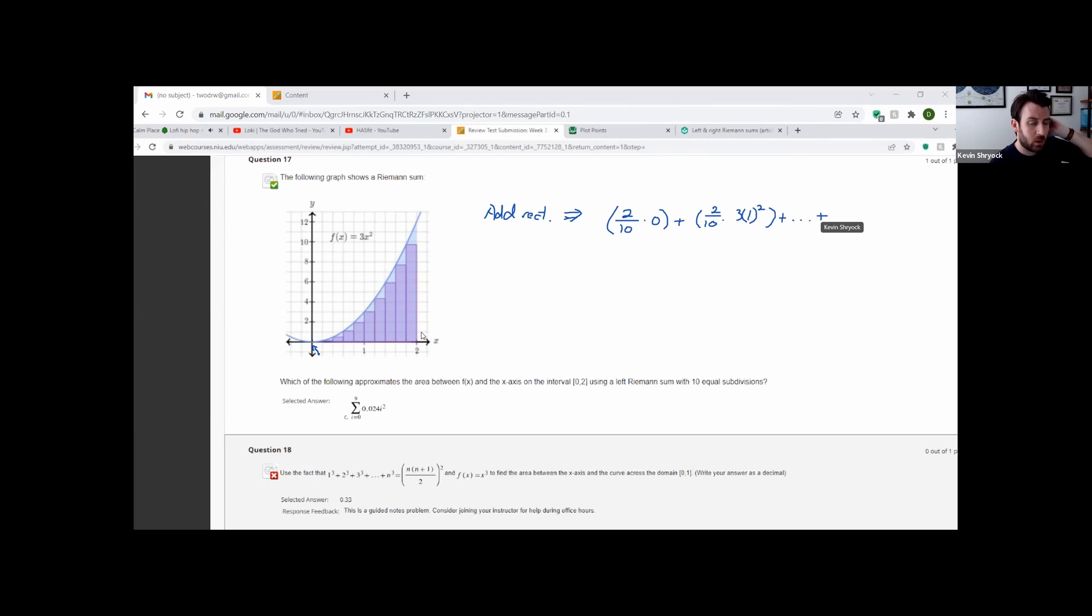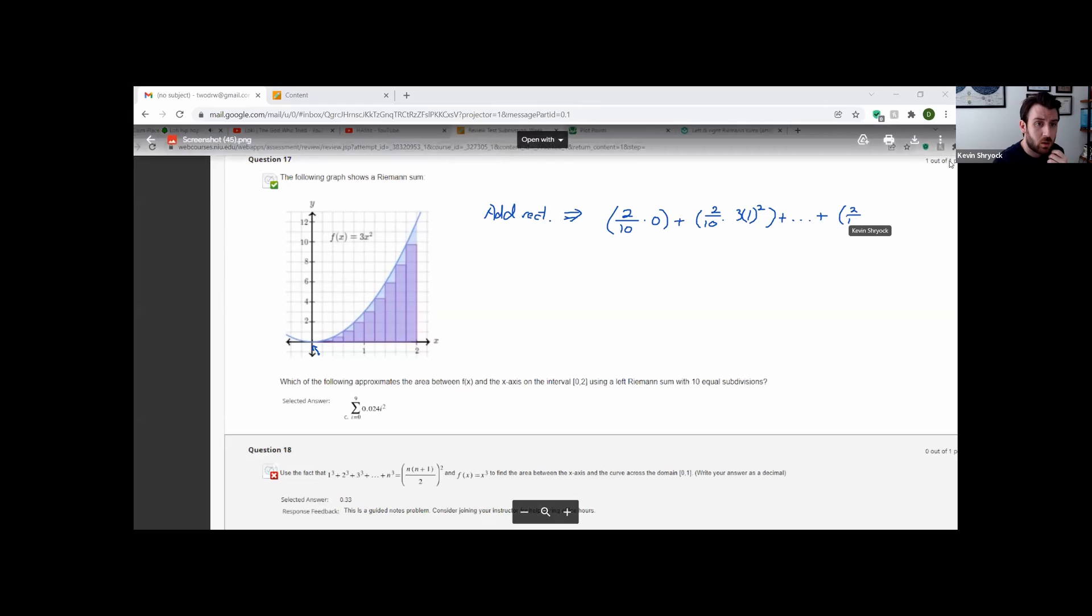Continue that thing running until the last rectangle, which has a width of 2 over 10. There we go. All right, 2 over 10, height of, went over 1, 2, 3, 4, 5, 6, 7, 8, 9 rectangles. Up to the function. Oh, no, I made a mistake here because it's 9 rectangles, not 9 units, 9 rectangles.